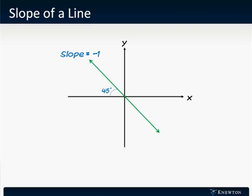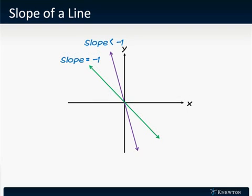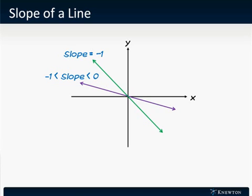For negative slopes, lines with slope -1 make a 45-degree angle. Steeper lines have slope less than -1, and lines that are less steep have slope between 0 and -1, such as -1/2.